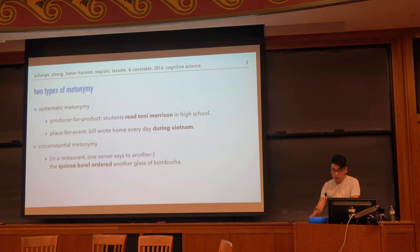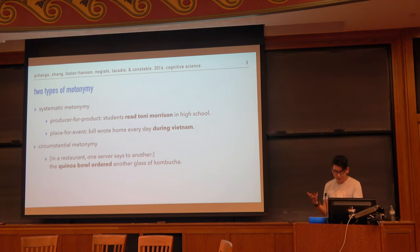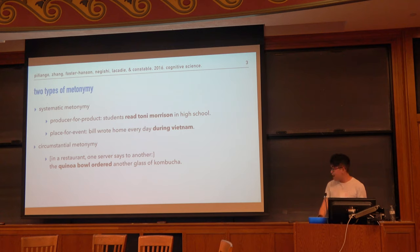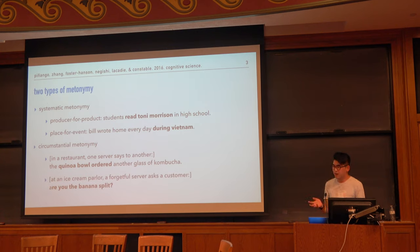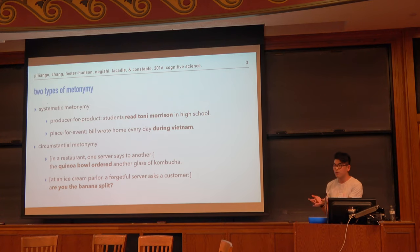We compared systematic metonymy with circumstantial metonymy, which is more context-dependent. For example, in a restaurant, one server says to another, the quinoa bowl asks for another glass of kombucha. Or at an ice cream parlor, someone says, are you the banana split? — referring to the customer who ordered it, rather than the actual object itself.